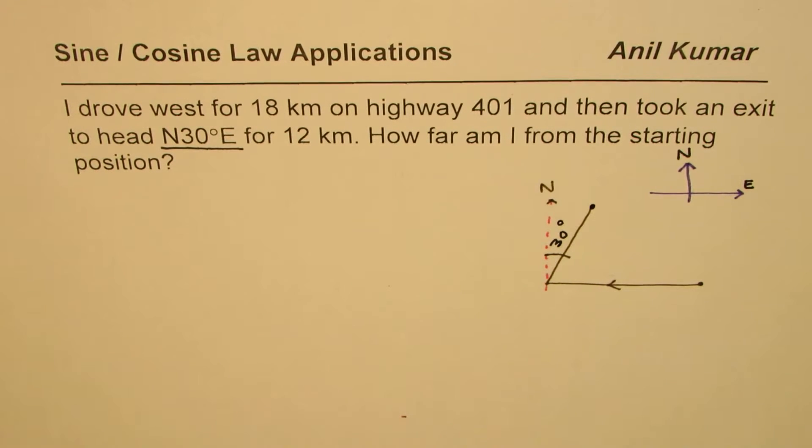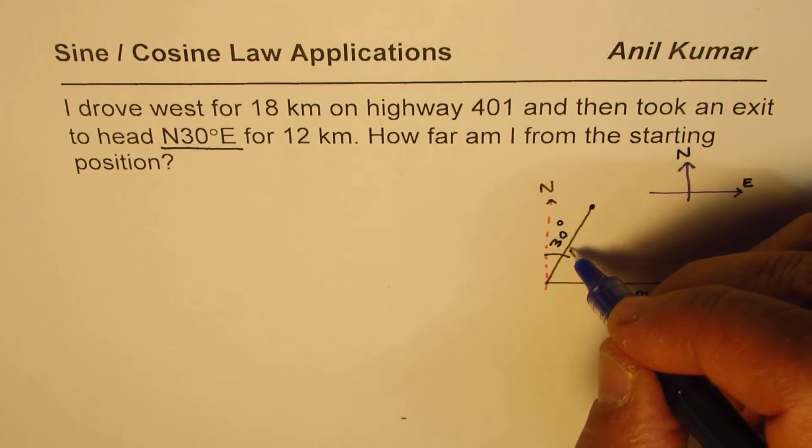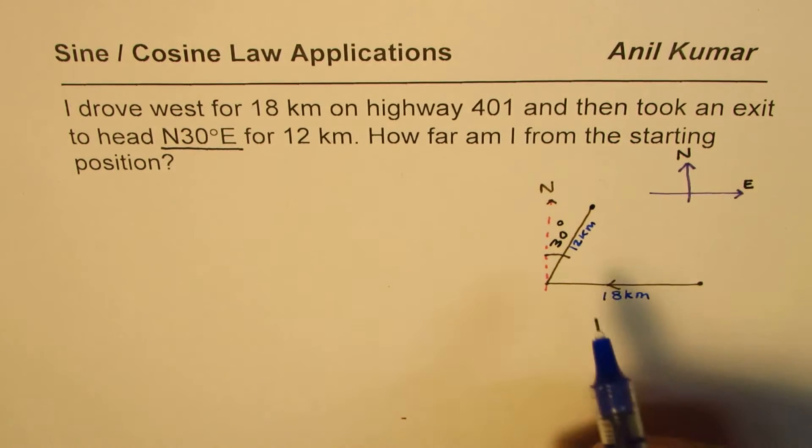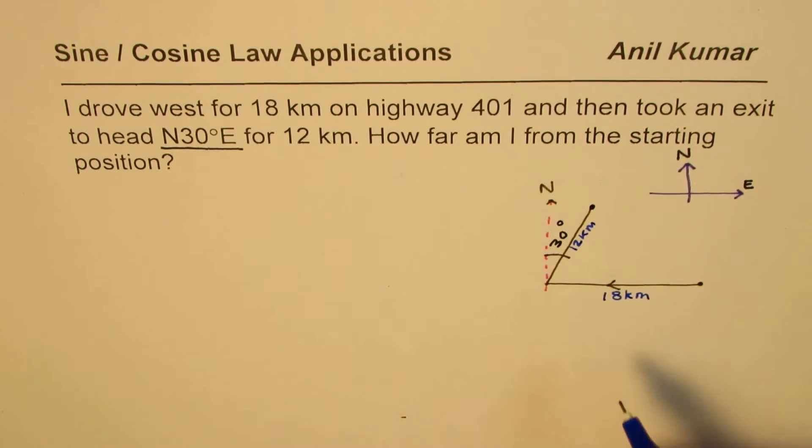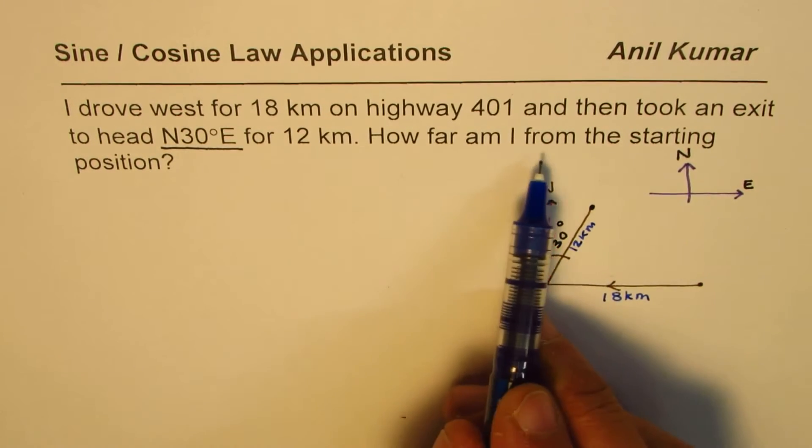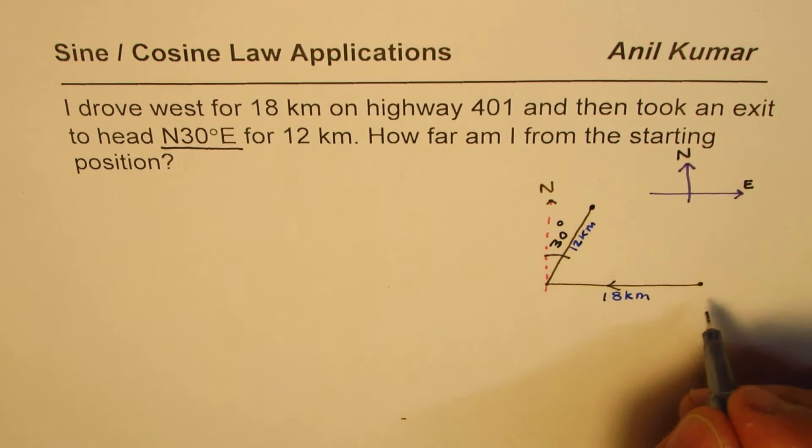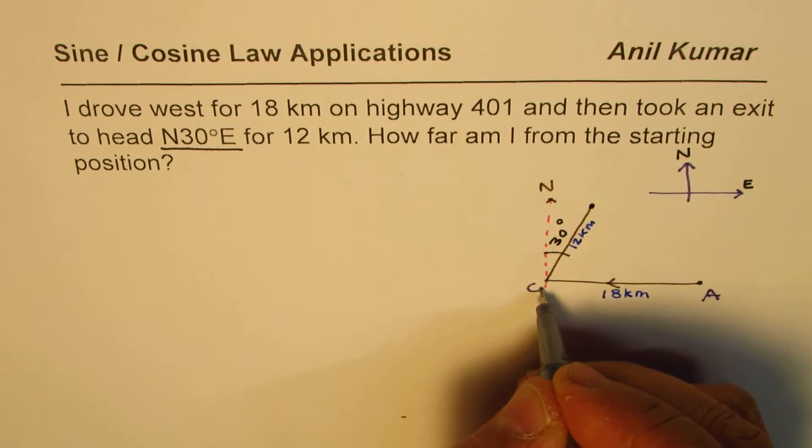We travel 18 kilometers west and now 12 kilometers, 30 degrees from north 30 degrees east. How far am I from the starting position?